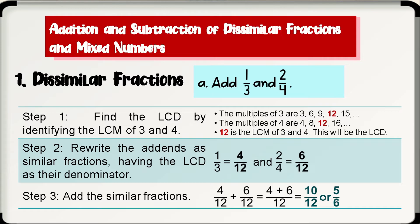Step 2: rewrite the addends as similar fractions having the LCD as their denominator. That is, 1 third is equivalent to 4 over 12, and 2 over 4 is equivalent to 6 over 12. Lastly, we add the similar fractions: 4 over 12 plus 6 over 12. Add the numerators 4 and 6, which equals 10, and copy the common denominator, which is 12. Simplifying to lowest term gives 5 over 6. Therefore, 1 over 3 plus 2 over 4 is equal to 5 over 6.